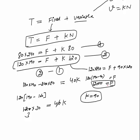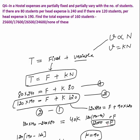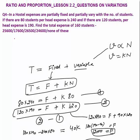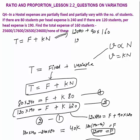Now calculate total expense for 160 students: Total = F + K × N = 12,000 + 90 × 160 = 12,000 + 14,400 = 26,400. The answer is Rs.26,400, which is 'none of these' among the options. That was all about Ratio and Proportion Lesson 2.2 — questions on variation. Thank you.